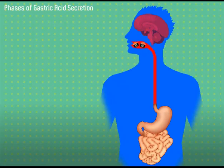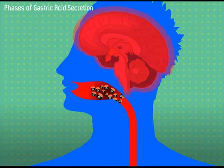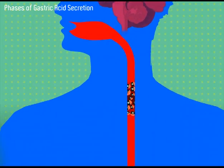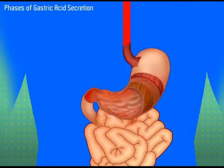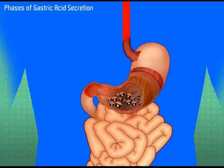As food enters the stomach in the gastric phase, it provides chemical and mechanical stimulation that activates three pathways to increase secretory and motor responses, which then stimulate gastric acid secretion.